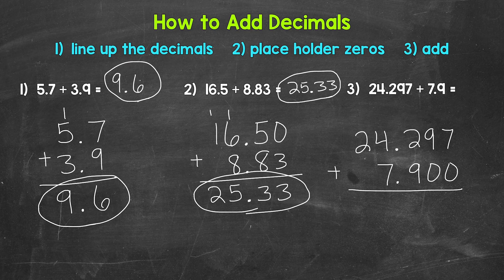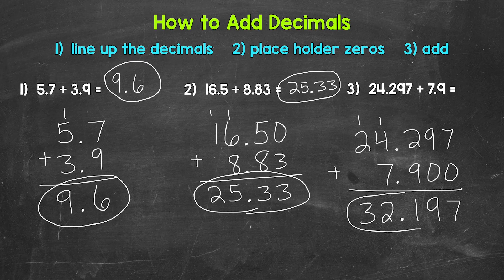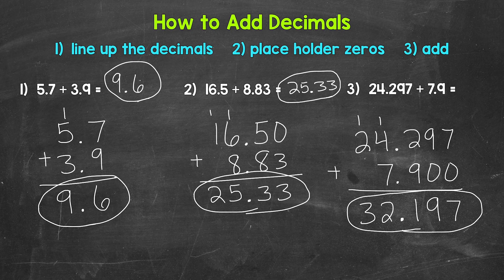Now we're ready to add, starting with the thousandths place. Seven plus zero is seven. Nine plus zero is nine. Two plus nine is eleven. Bring the decimal straight down. Then one plus four is five, plus seven is twelve. One plus two is three. We end up with thirty-two and one hundred ninety-seven thousandths. Note: you can bring the decimal down as you work, or add everything first and then place the decimal — either way works. Just don't forget to place that decimal in the answer. So twenty-four and two hundred ninety-seven thousandths plus seven and nine-tenths equals thirty-two and one hundred ninety-seven thousandths.